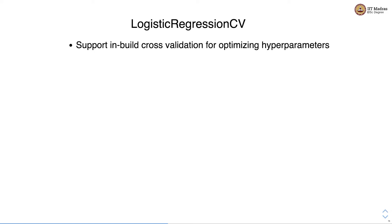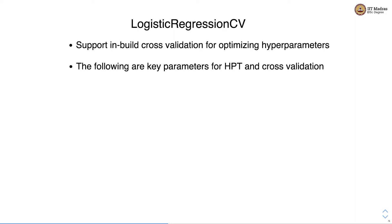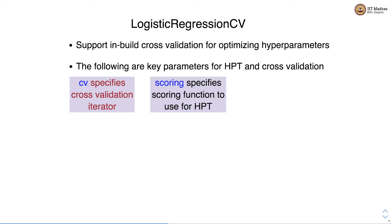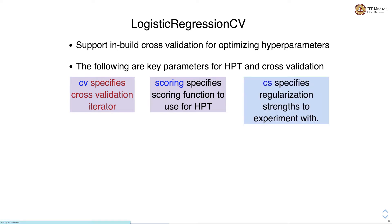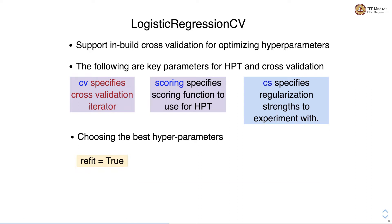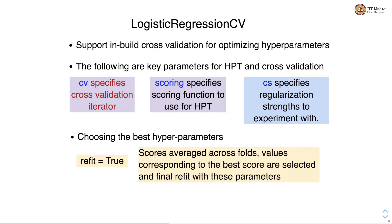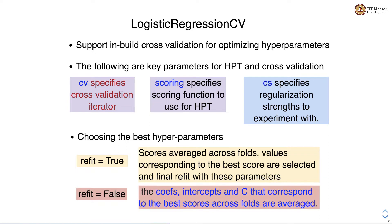LogisticRegressionCV has support for built-in cross-validation for optimizing hyperparameters. The key parameters are: cv, which specifies the cross-validation iterator; scoring, which specifies the scoring function to use for hyperparameter tuning; and Cs, which specifies regularization strength. We can set refit to true, and when we do so, scores are averaged across folds and the values corresponding to the best score are selected — the final refit is performed with these parameters. If we set refit to false, we get the coefficient, intercept, and value of C corresponding to the best scores across folds based on averaging.